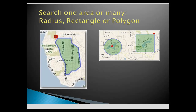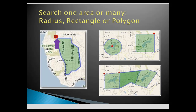With Matrix, select from radius, rectangle, or polygon search options. Select one area, or create multiple areas on the same search. When creating a polygon search, use as many points as you need. It is even possible to exclude designated areas within a perimeter.